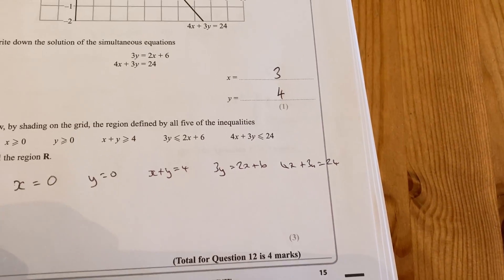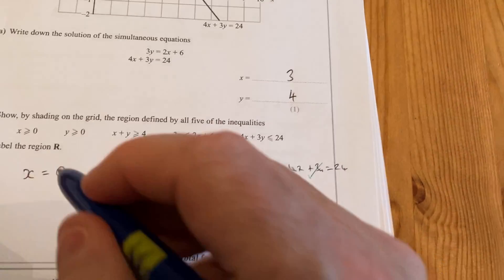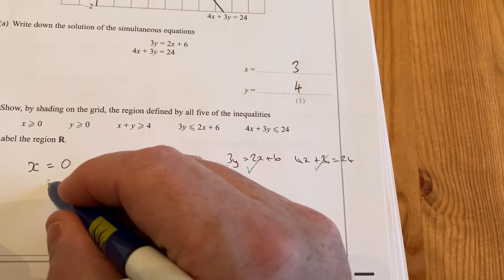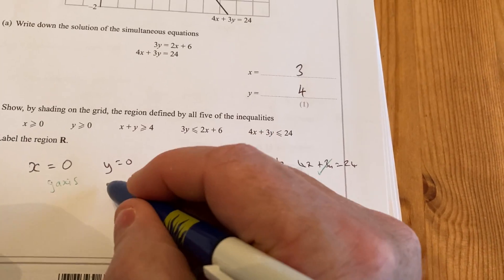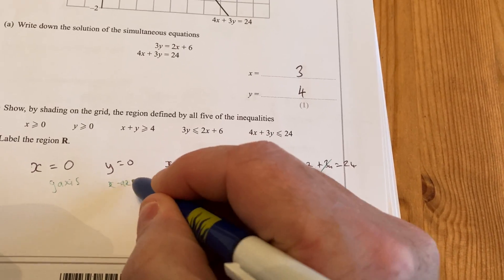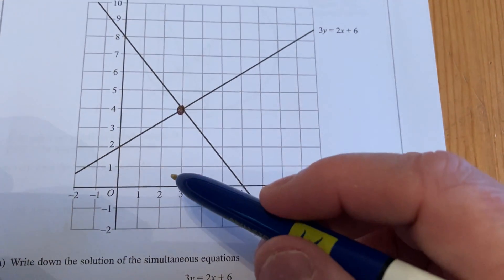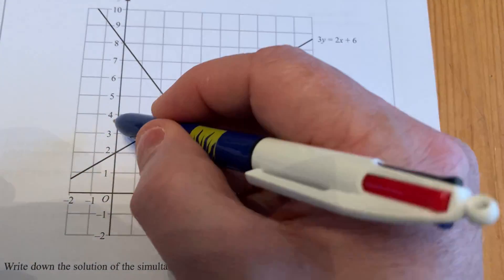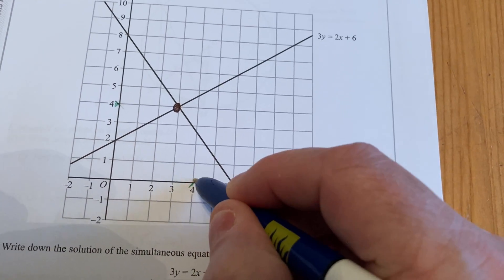Two of the lines have already been drawn on the graph for us, that one and that one already on the graph. x equals 0 is the y-axis, y equals 0 is the x-axis, and the line x plus y equals 4, x plus y equals something goes through that number on the y-axis as it does on the x-axis.